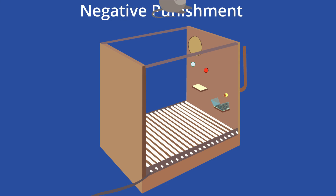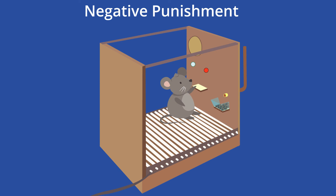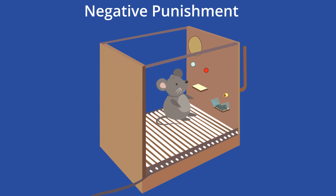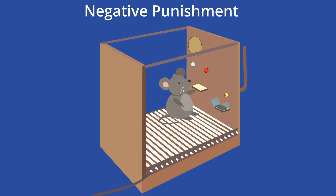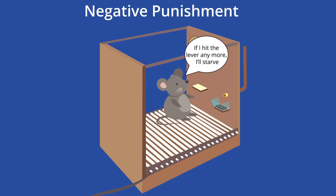When using negative punishment — which involves removing something pleasant to discourage a certain behavior — Skinner would reduce the amount of daily food pellets given to the animals each time they pressed the lever or button. This also resulted in the animal eventually ceasing to press the levers and buttons.